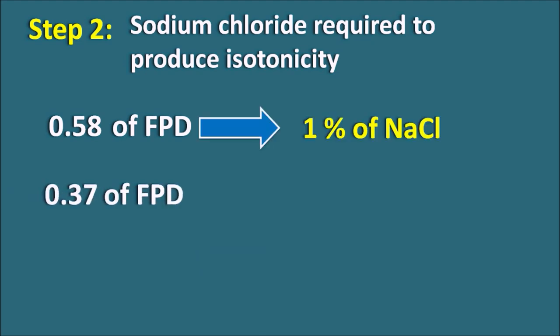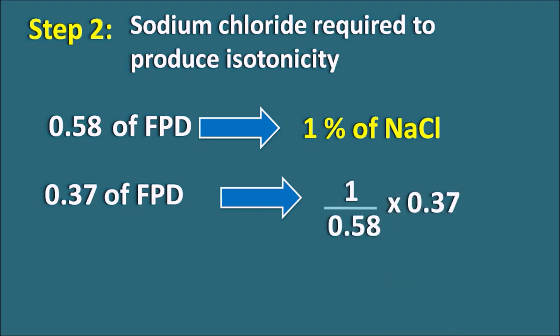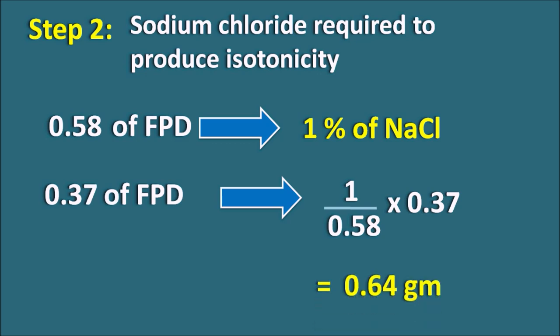We know that 1% sodium chloride produces a freezing point depression of 0.58. So to produce 0.37 FPD, the amount of sodium chloride needed = (1 / 0.58) × 0.37 = 0.64 grams. This can also be represented as 0.64% w/v, i.e., 0.64 grams per 100 ml. So 0.64 grams of sodium chloride is required for 100 ml to produce isotonicity.